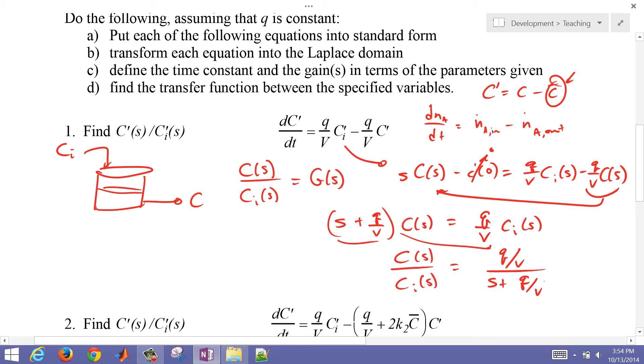And then the other thing I can do is just go ahead and multiply both sides by V over Q. And that's going to give me 1 over V over Q times S plus 1.